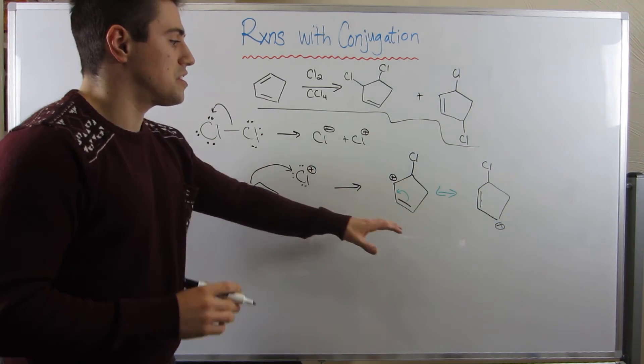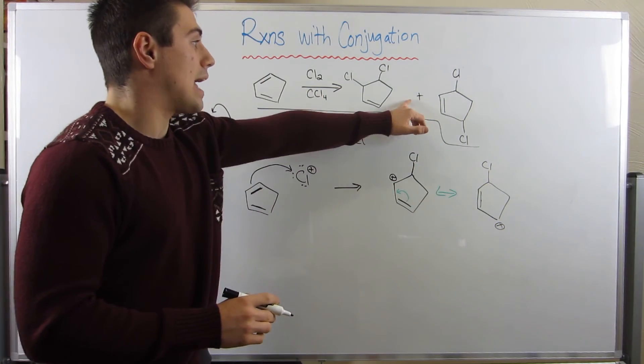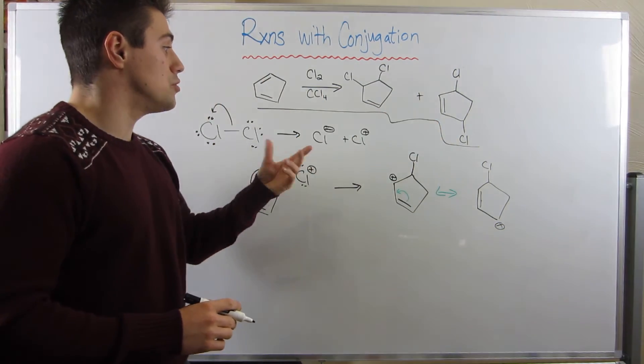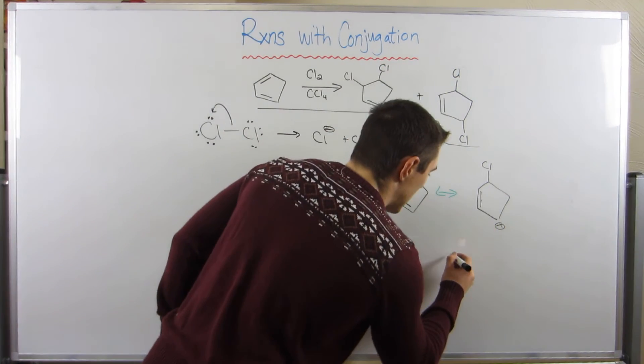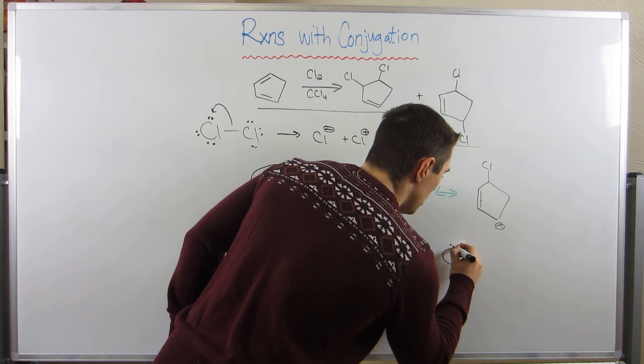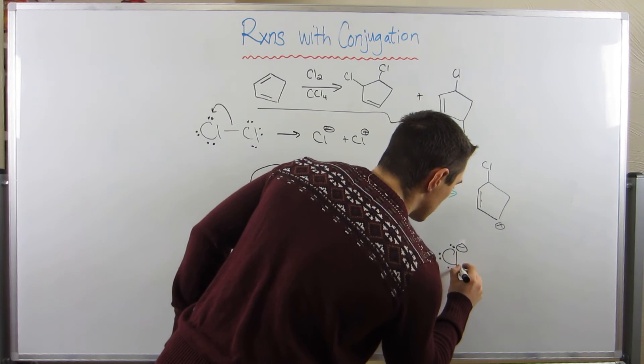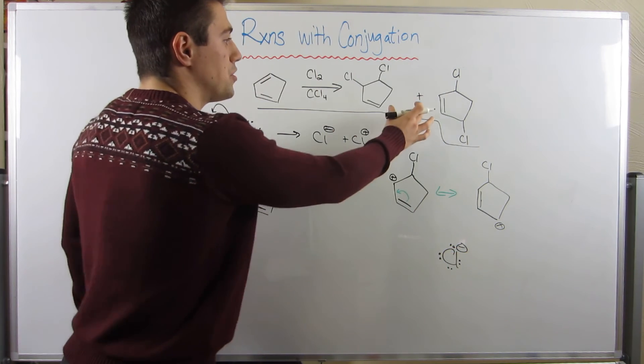Double bond is moved right down here, and now the carbocation shifts there. Okay, hopefully this is giving us some insight as to how this occurred. Because our nucleophile is the Cl- we produced above. He's just waiting to attack. But you can see both the resonance forms kind of illustrates how both these products are made.